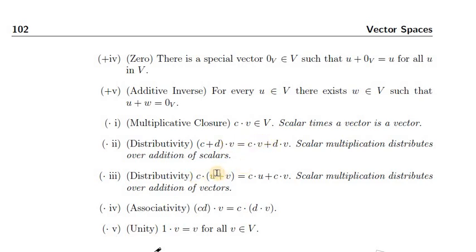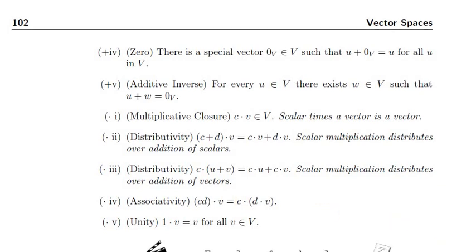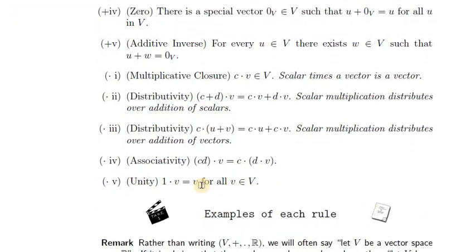Scalar multiplication distributes over addition of scalars: you can add two scalars and multiply, and that's the same as adding the scalar multiples. There's also distributivity over summation of vectors: you can add two vectors and multiply by a scalar, which equals scalar-multiplying each and then adding. We also have associativity of scalar multiplication — note that cd times v involves two different types of multiplication — and finally, the scalar 1 times v always equals v.